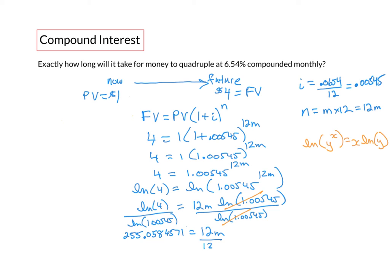Finally we divide both sides by 12 to get m. Again the 12s will cancel.